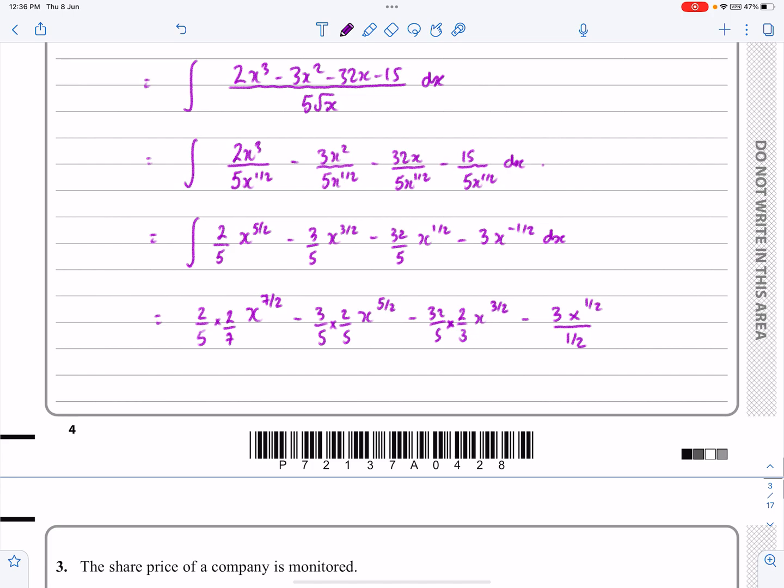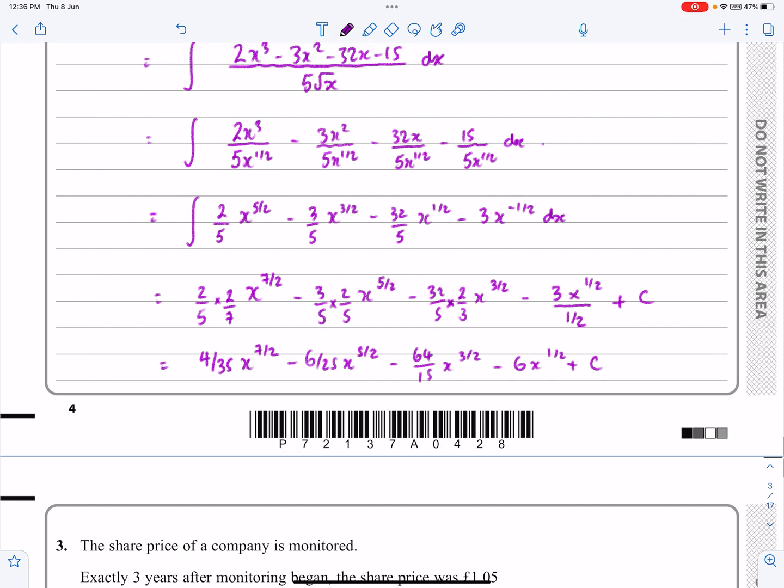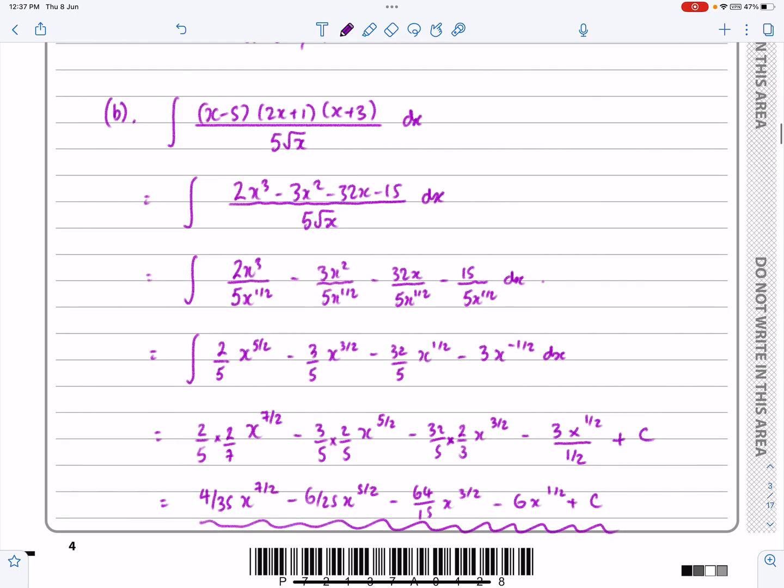I think it's easier now when I'm tidying this all up to get my final answer. I've got 4/35 x^(7/2). I've got 6/25 x^(5/2). I've got, what have I got there, 64/15 x^(3/2). And I've got -6x^(1/2) + c. I'm surprised that at some stage when we had something like that, that there weren't things cancelling out. But that's fine, they decided not to do that with this one. So this is my answer in its simplest form. So that's question number 2, finished. Hopefully that all makes sense.